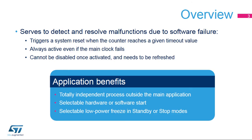The Independent Watchdog is used to detect and resolve malfunctions due to software failure. It triggers a reset sequence when the counter reaches the timeout value. Since its clock is an independent 32 kHz Low-Speed Internal RC Oscillator, or LSI, it remains active even if the main clock fails. Once enabled, it can only be disabled by a reset.